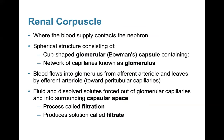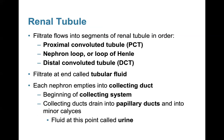The renal corpuscle is where blood supply contacts the nephron. It is a spherical structure consisting of a cup-shaped glomerular capsule containing a network of capillaries called the glomerulus. Blood flows into the glomerulus from the afferent arteriole and leads toward the peritubular capillaries. Fluid and dissolved solids are forced out of the glomerular capillaries into the surrounding capsular space — a process called filtration, producing a solution called filtrate. The filtrate flows through the PCT, loop of Henle, and DCT, and filtrate at the end is called tubular fluid. Each nephron empties into a collecting duct; collecting ducts drain into papillary ducts, then minor and major calyxes — at which point it is referred to as urine.